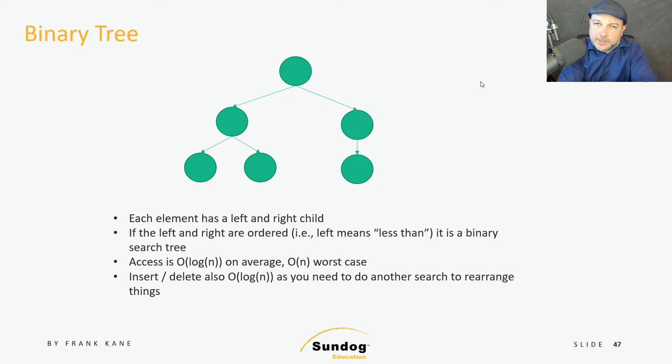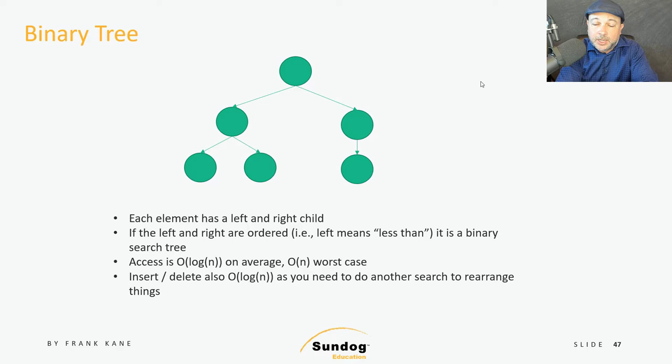Sometimes theory and reality are a little bit different, and it's good to speak to that. Insertions and deletions are also O(log n) in the best case and O(n) in the worst case, because you have to do a search to find out how you're going to rearrange things. Sometimes you'll see implementations of binary search trees that are self-balancing — algorithms that rearrange the tree as you insert things to keep it balanced. This is useful when you're doing a lot of lookups at massive scale, and if you really want to optimize for fast lookups, a self-balancing binary tree might be the way to go.